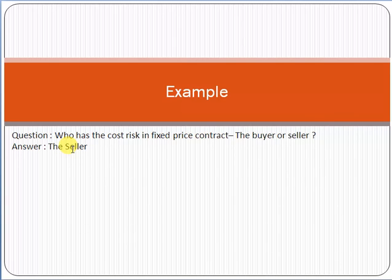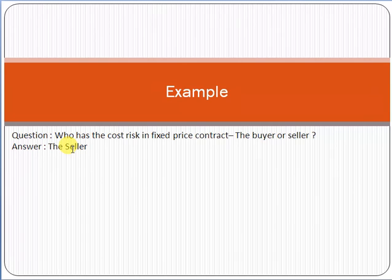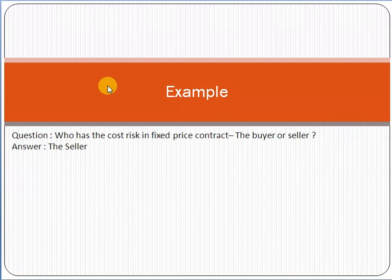Here, who bears the cost risk? It is the seller — the vendor providing the services. There is no risk on the buyer's side, meaning the bank, because it is a fixed price contract. Fixed price, or lump sum, means you agreed to deliver for $5,000 for five months. So the total risk is on the seller's side. If any delay occurs, the seller or vendor has to face the consequences, and there is no risk involved at the customer or bank's side.